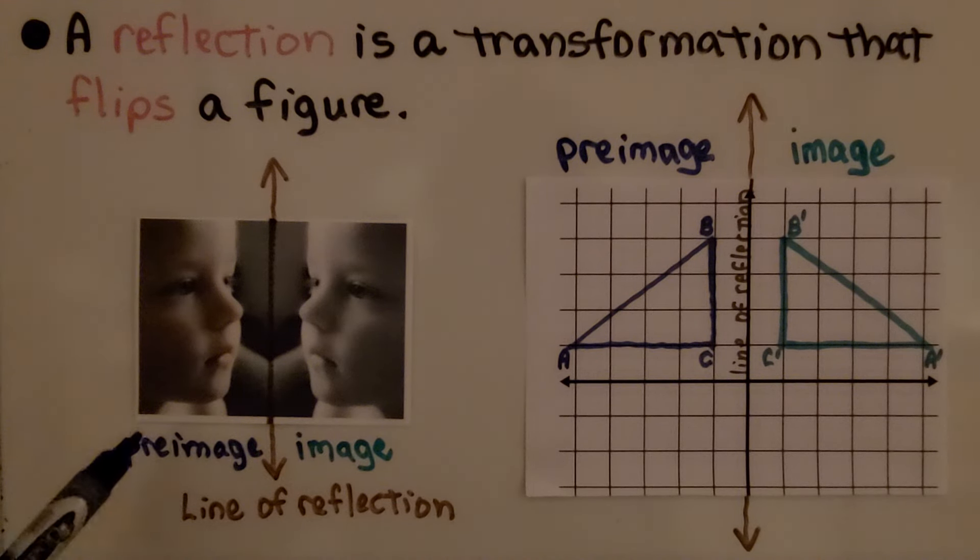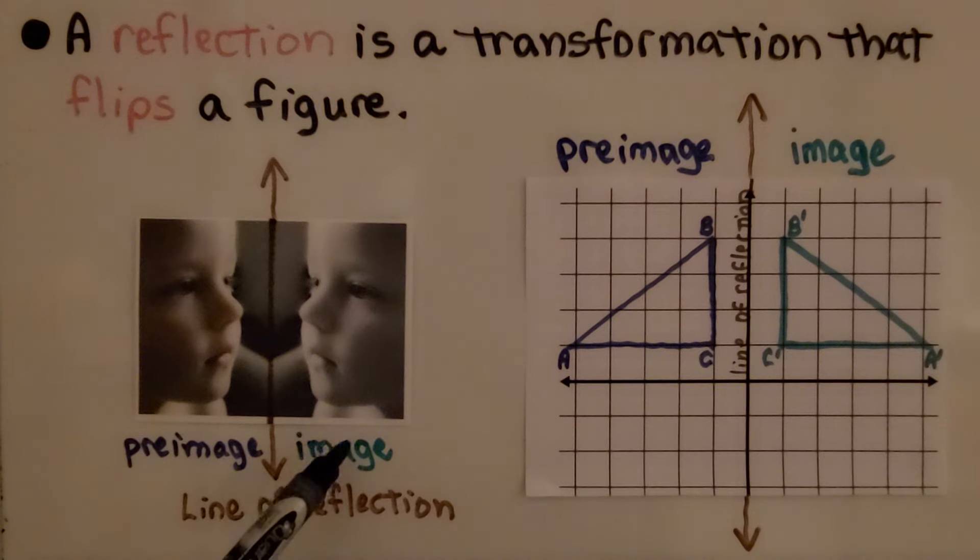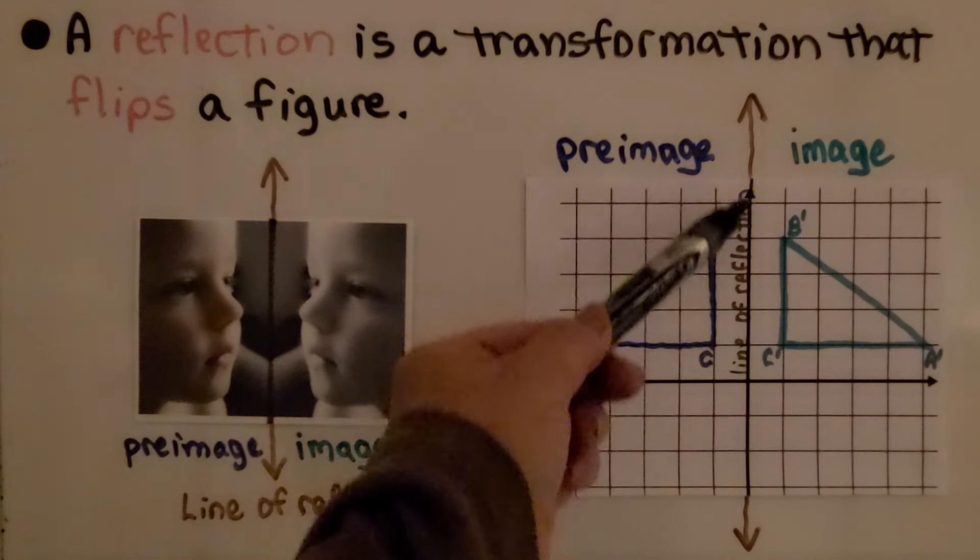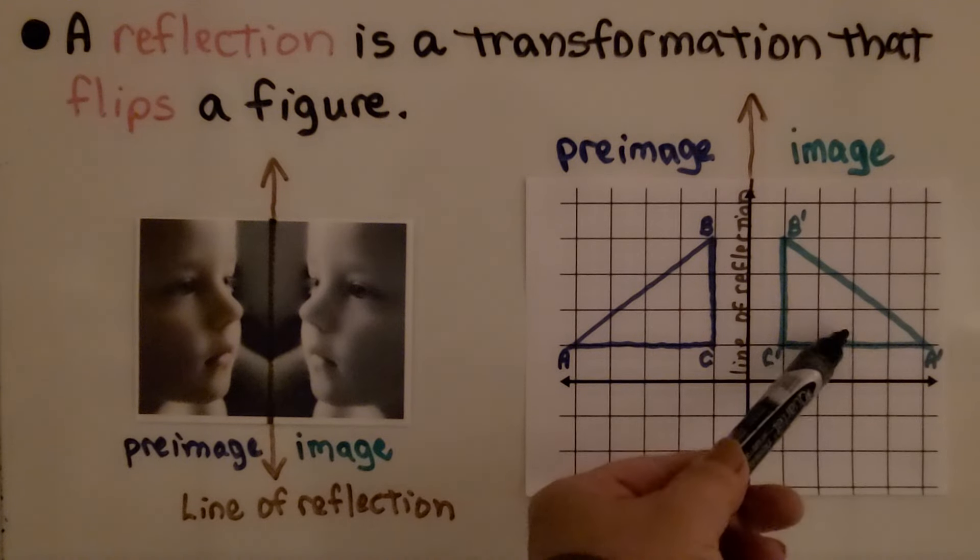For a mirror, we have our pre-image, that's ourself, and our reflection is the image. The pre-image flips across the line of reflection to make the image.